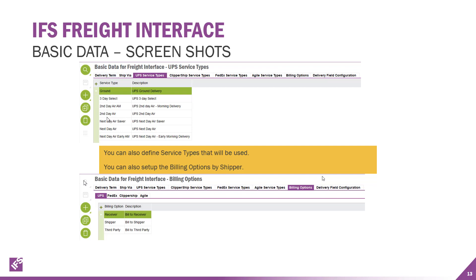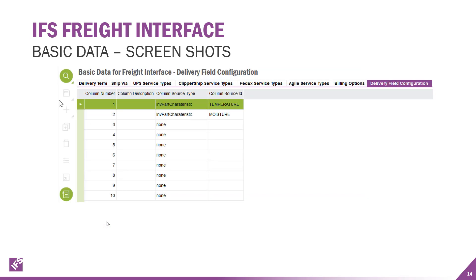You also have the billing options — information used by UPS — and what they need to see. You can also add additional free-form user-defined fields that you might want to pass with the freight interface. If you need to pass temperature, moisture, or different characteristics unique to your particular product, we have 10 out-of-the-box ones available. You configure that through the mapping you do between IFS and the shipping application being used.